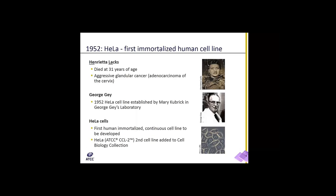In 1952, HeLa was the first human immortalized cell line to be derived. This cell line came from the aggressive glandular cancer from a female of African origin, Henrietta Lacks. This cell line was derived in George Gay's laboratory by Mary Kubitschek, who was then at Johns Hopkins University. The cell line turned out to be the second cell line deposited in the cell biology collection at ATCC, CCL2.